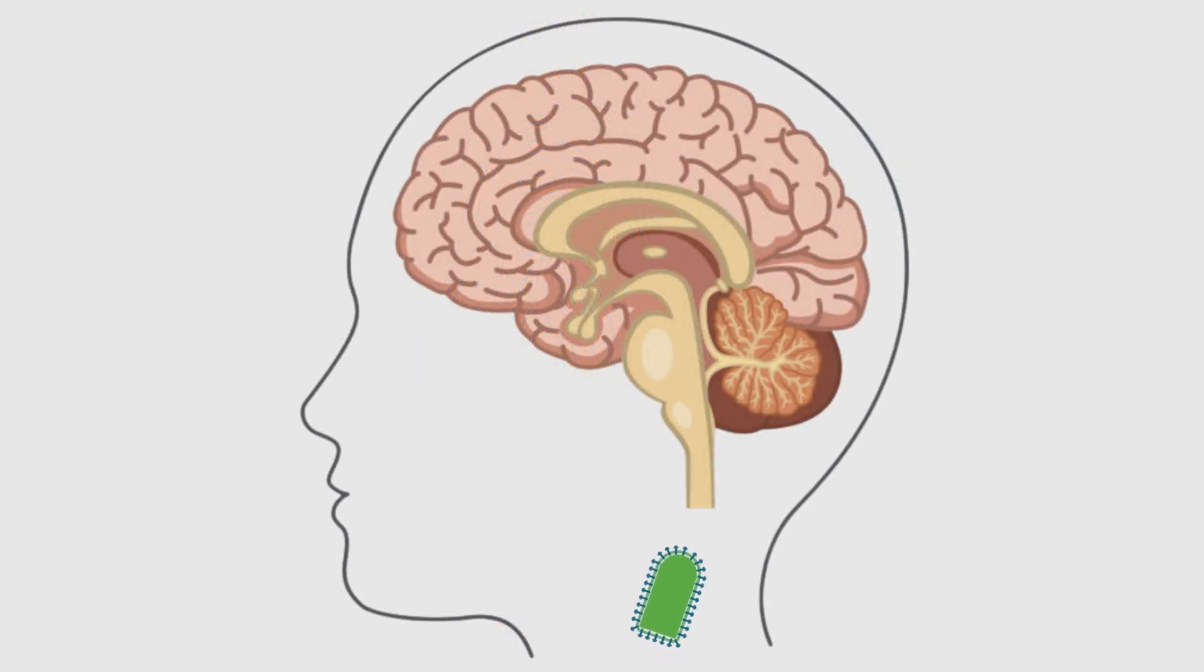After reaching the brain, it replicates in the cell bodies of neurons. The brainstem and hippocampus regions of the brain are most affected and account for the rabies symptoms.